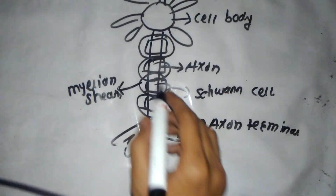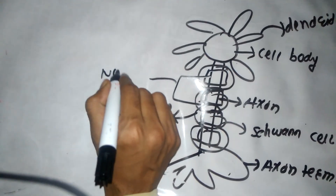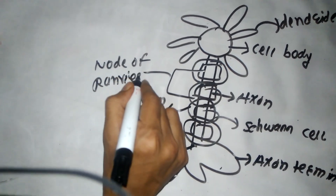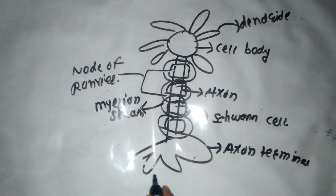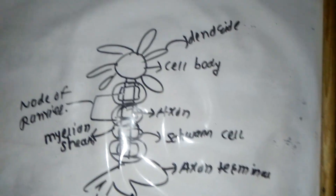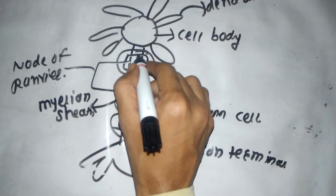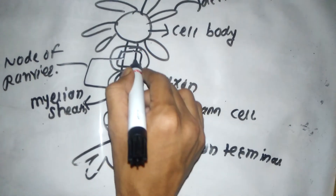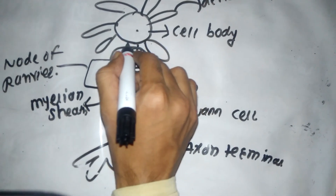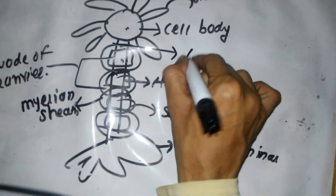The distance between two Schwann cells is known as the node of Ranvier. Now one point remaining: the gap between the cell body and the first Schwann cell is called the axon hillock.